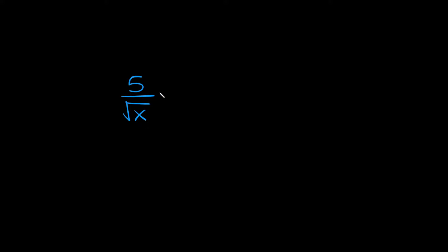So here we have 5 over the square root of x. Whenever you rationalize the denominator, that just means you're trying to get rid of this radical symbol. The way you do that is you multiply the top and the bottom by whatever you have in the denominator — so we have the square root of x, so we multiply the top by the square root of x and the bottom by the square root of x.